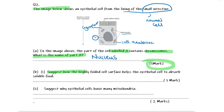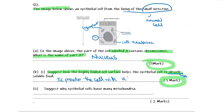Suggest how the highly folded cell surface helps the epithelial cells absorb soluble food. Think back to the word 'absorb,' which is to do with surface area. The highly folded surface provides the cell with a larger surface area.